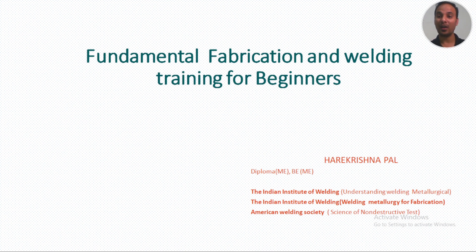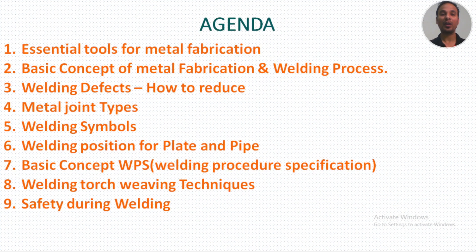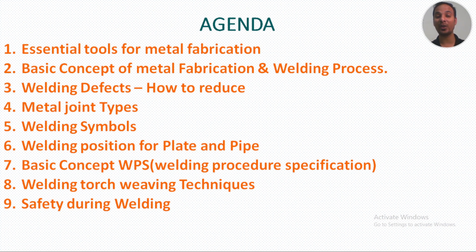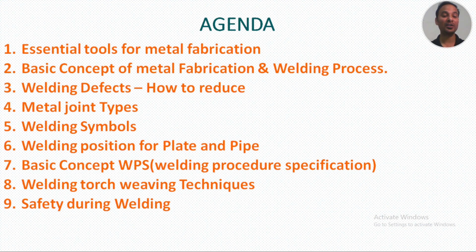In the previous lessons, we covered essential tools for metal fabrication, basic concepts of the metal fabrication and holding process, welding defects and how to reduce them, metal joint types, welding symbols, welding positions for plate and pipes, basic concept of WPS, basic welding torch welding techniques, and welding safety.